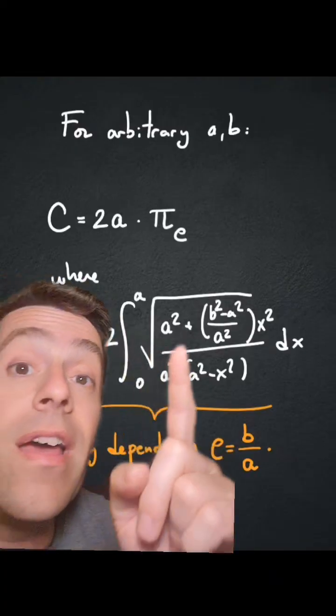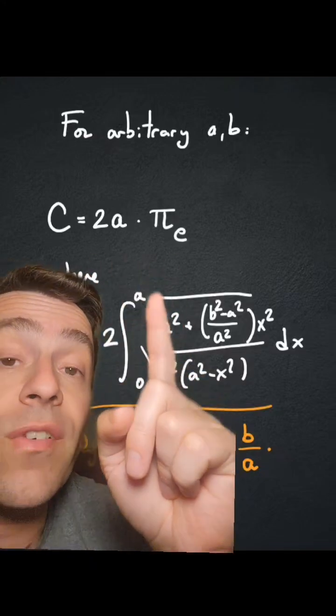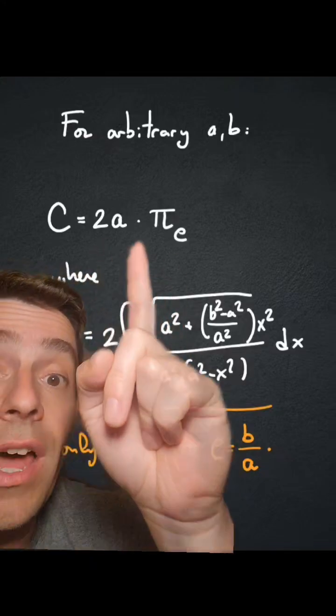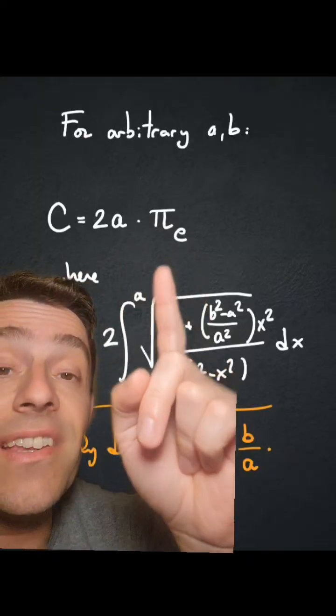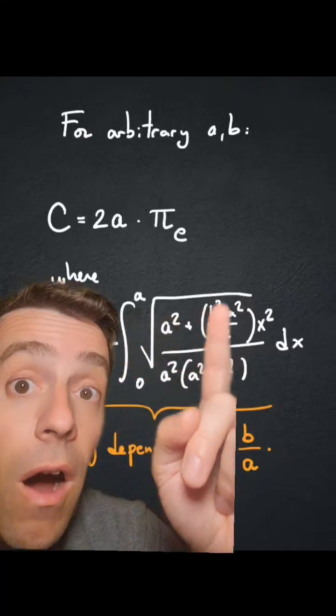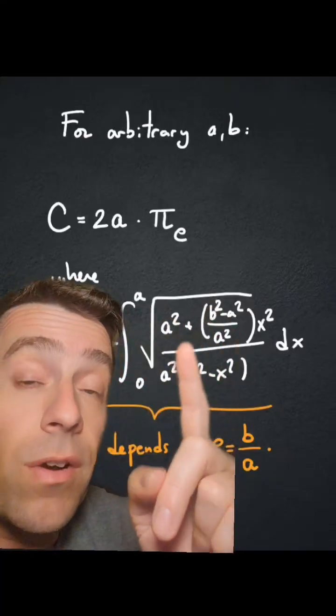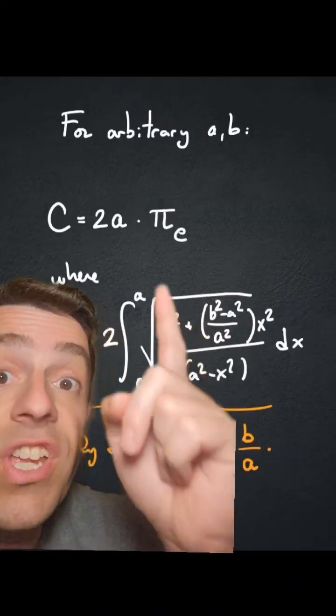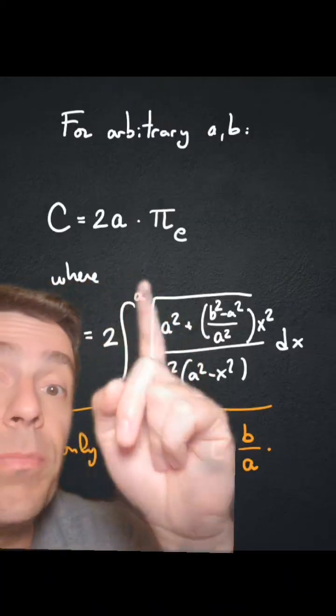And with this formula, the formula for the circumference of an ellipse is just 2 times a times pi sub e, which reminds us of the formula 2πr for a circle of radius r, which is the case of the ellipse when a equals b equals r.